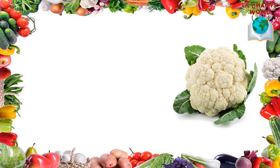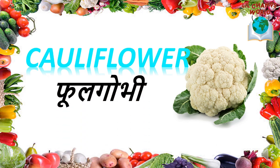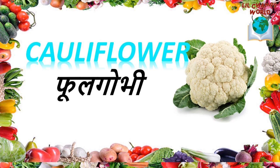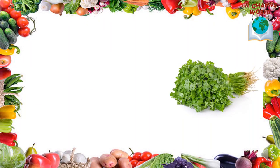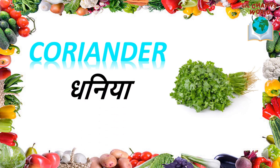What is the name of this vegetable? Coriander. C-O-R-I-A-N-D-E-R. Coriander. Coriander is called Dhania.